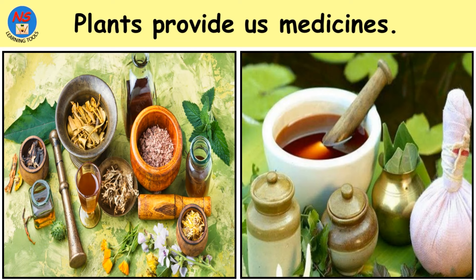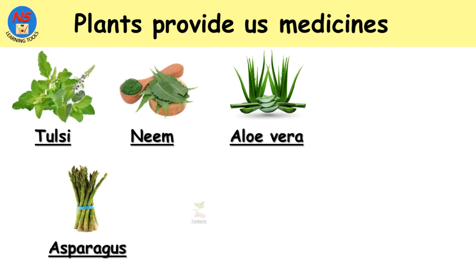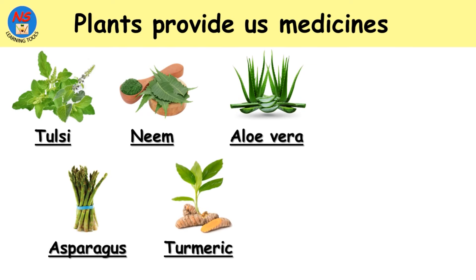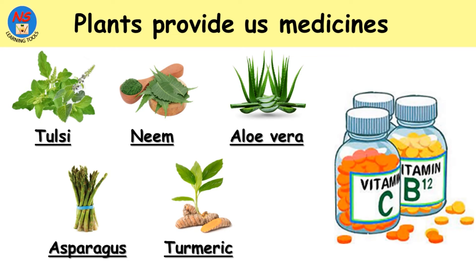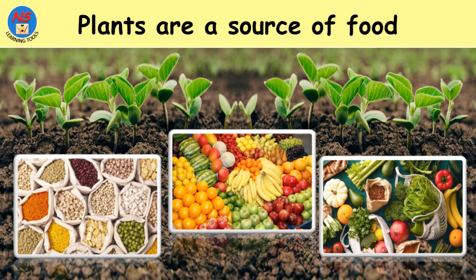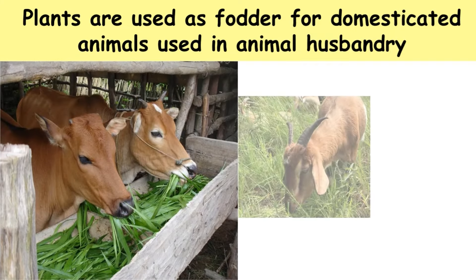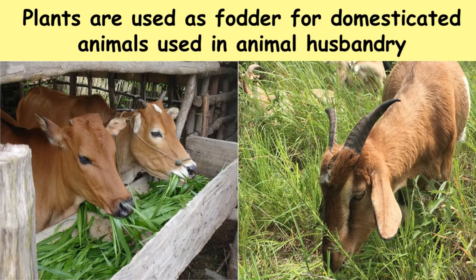Plants provide us medicines. Plants are the natural source of medicine. Tulsi, neem, aloe vera, asparagus, and turmeric are a few examples of natural medicinal plants. Different medicines are also made using plants.